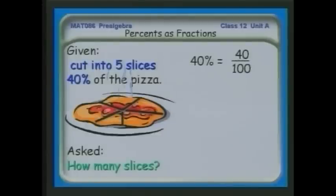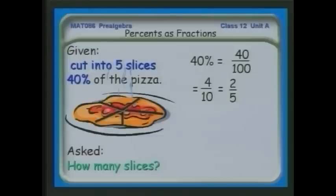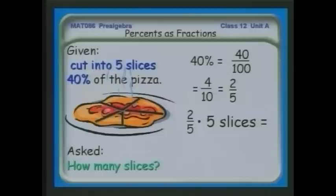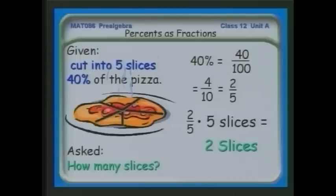40% is written as 40 one-hundredths. I can reduce that to lowest terms: 40 is 4 times 10 and 100 is 10 times 10, so the 10s cancel, giving me four-tenths. I can then factor a 2 out of numerator and denominator to get two-fifths. If the pizza is cut into five slices, two-fifths of five slices means two pieces out of five — I agreed to give my wife two slices. That's almost half. Boy, am I being generous when it comes to pizza.